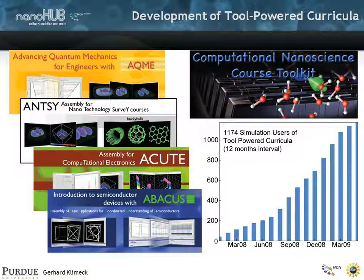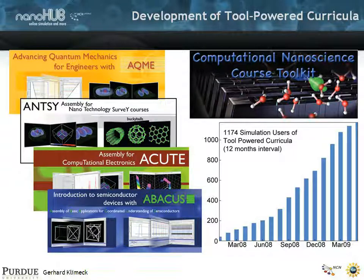We now have a whole set of these toolsets. I mentioned Abacus, the computational nanoscience toolkit, and ACME. We also have a nanotechnology survey course called ANSI, and an assembly for computational electronics called ACUTE. These toolsets, introduced about a year to a year and a half ago, have been used by over 1200 people around the world. So these are powerful assemblies of features.